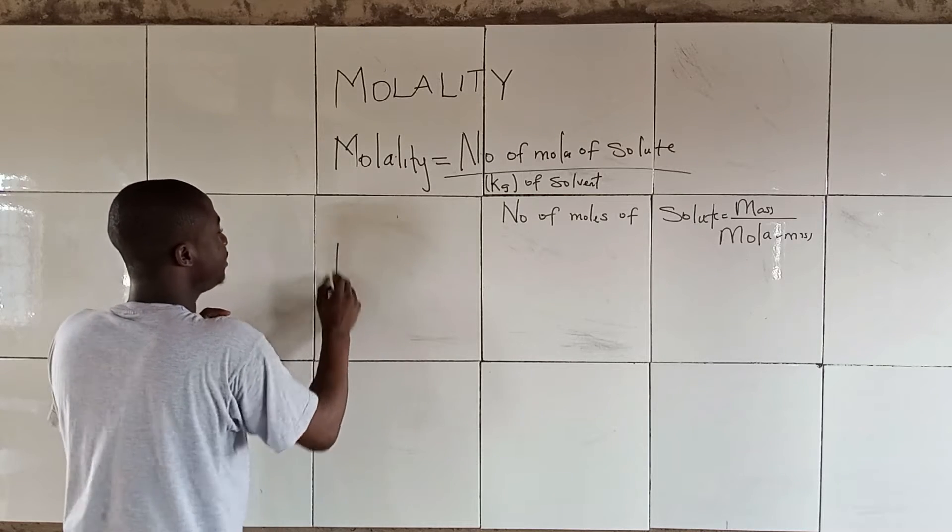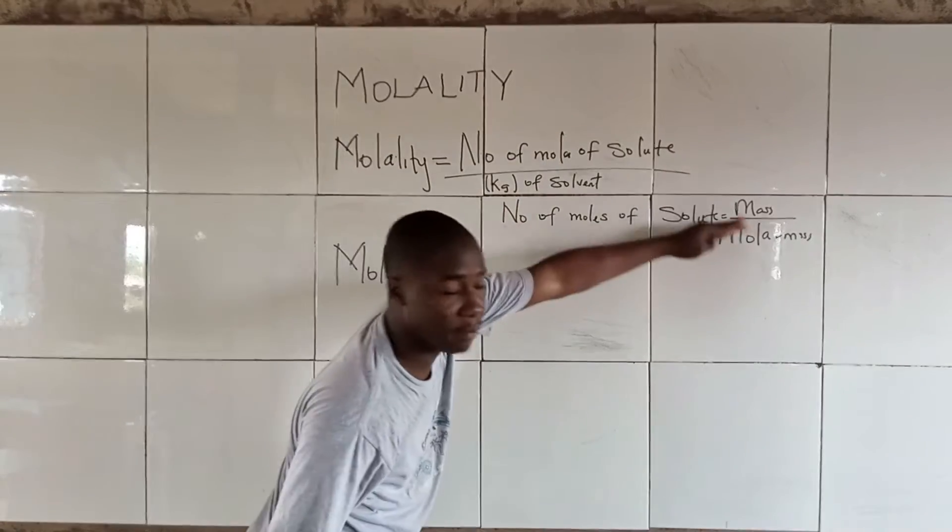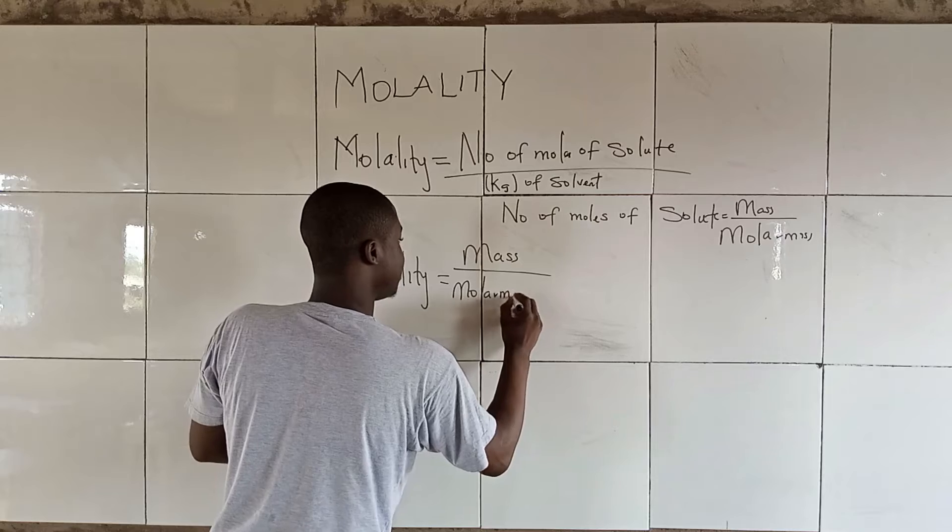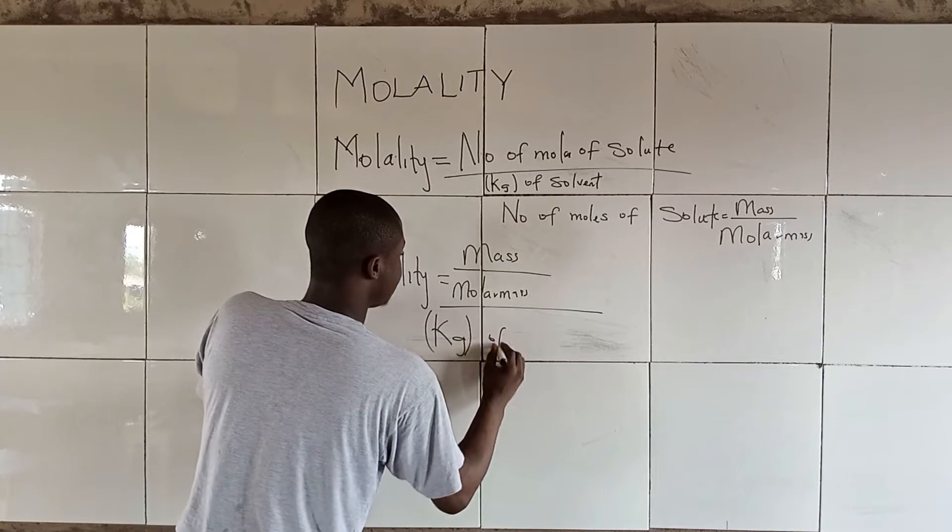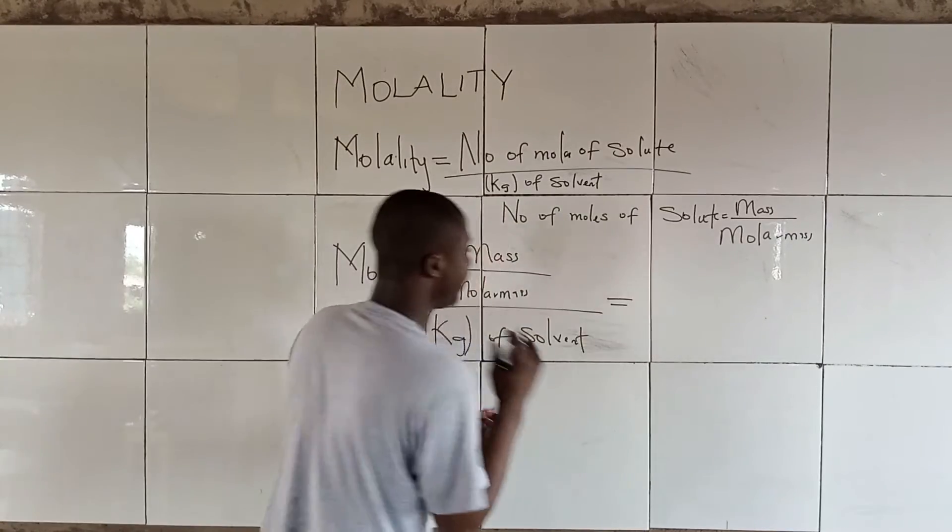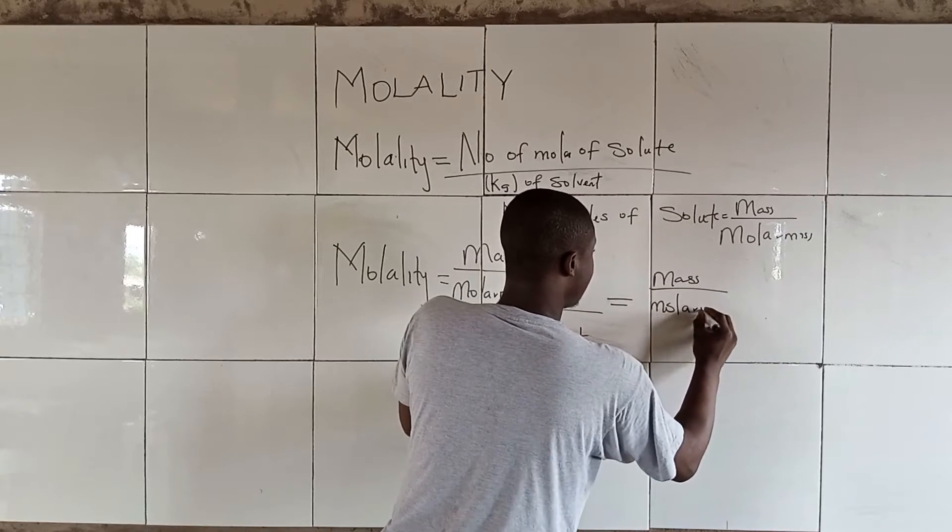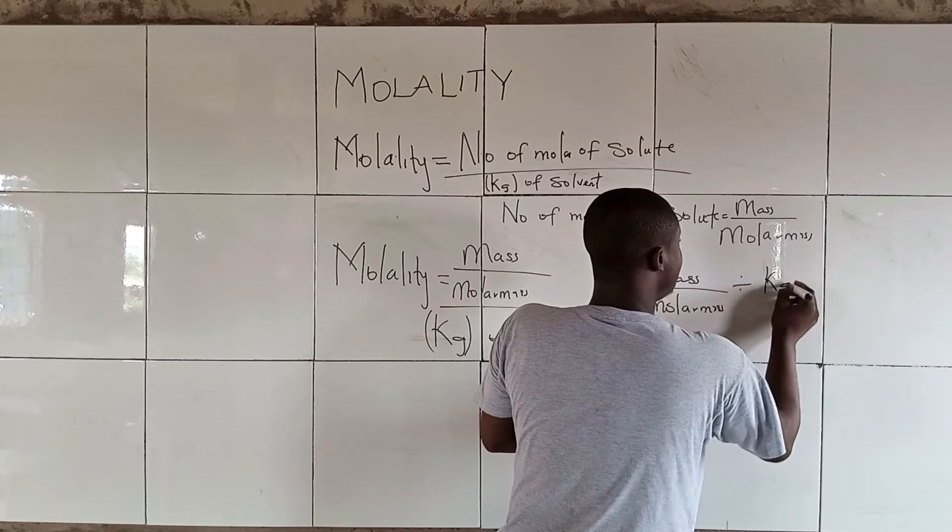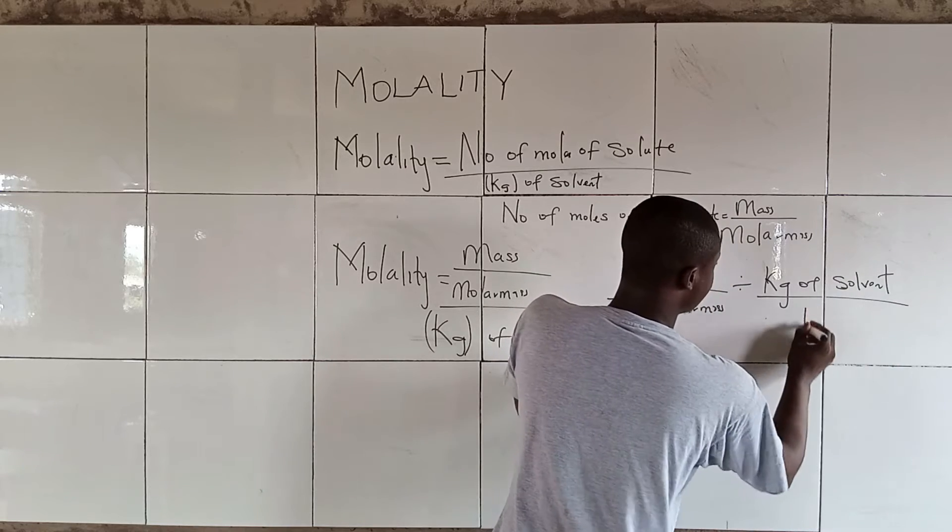So it simply becomes something like this. Molality will now be equal to the number of moles of solute which is given to be mass over molar mass, dividing kg of solvent. Bringing this formula down, making it simplified, it becomes mass over molar mass divided by kg of solvent over 1.